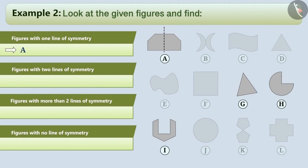Similarly, figures G, H and I have only one line of symmetry. Therefore, these are the figures which have one line of symmetry.